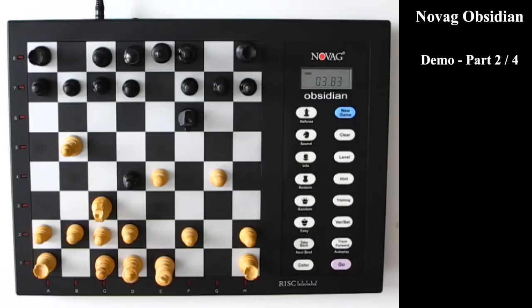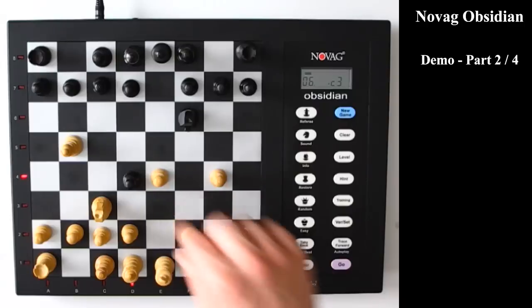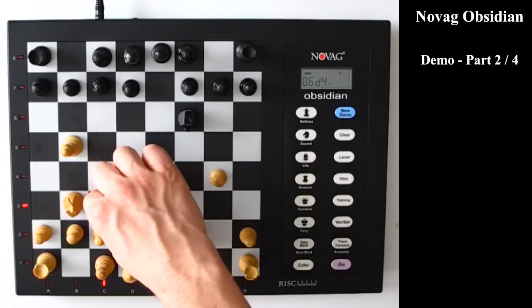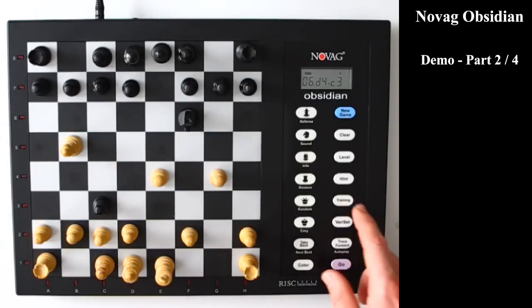Then there's also a training function. If you think that the computer waits too long making a move, then you can just force it to make a move by pressing go. So the training function kind of resembles the hint key but has a few more options. Don't be fooled though. Training doesn't mean that the computer will teach you chess.